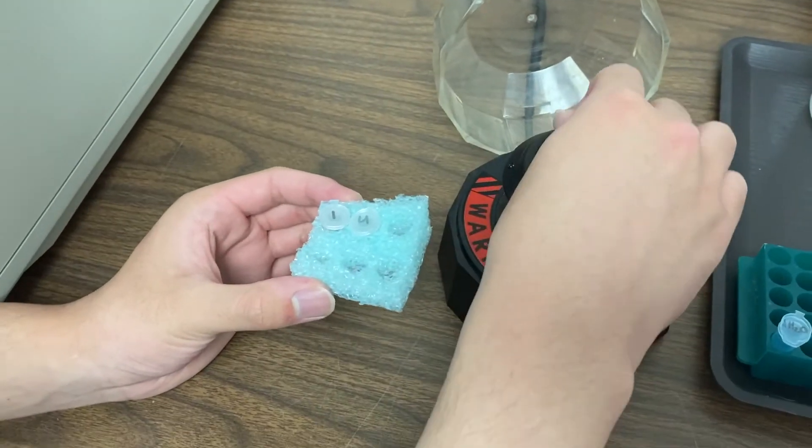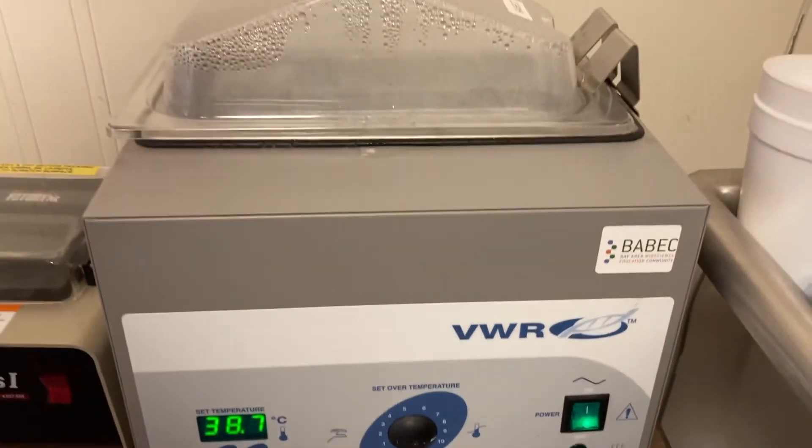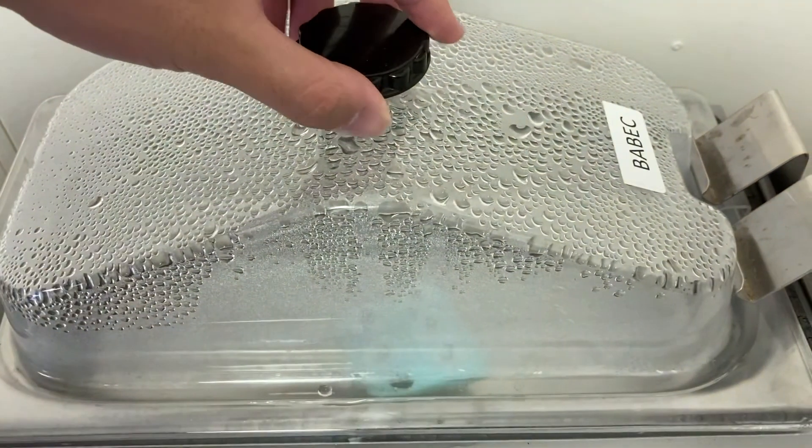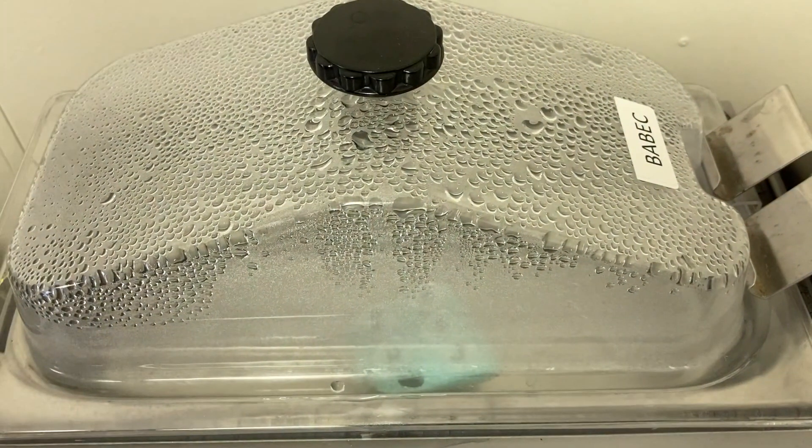Then we'll place our samples in a Styrofoam floaty for the last step of the Restriction Digest, which is simply to place your samples in a 37 degrees Celsius water bath for at least 10 minutes.